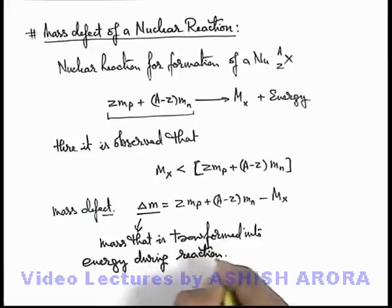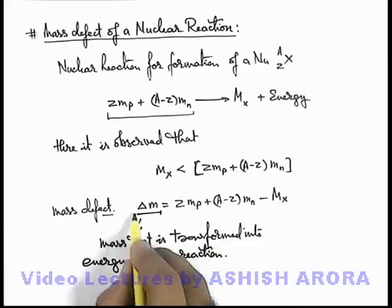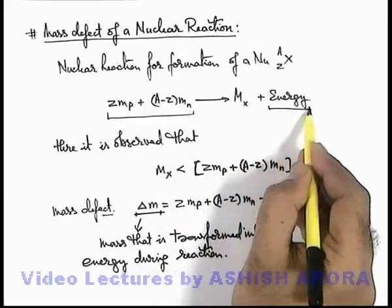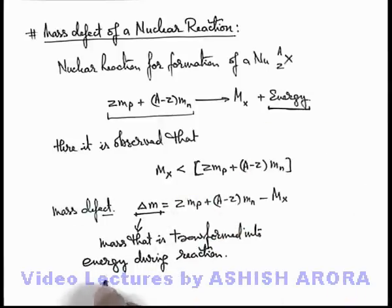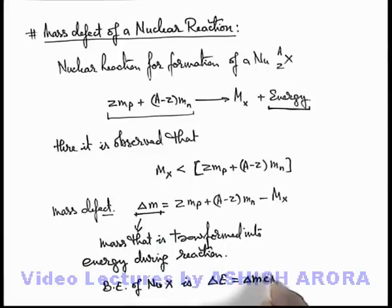And this mass defect is the responsible factor because of which this energy is being produced, because overall energy in a system is always conserved. So we can write this energy, or binding energy of nucleus X—this binding energy ΔE can be given as Δm times c squared.